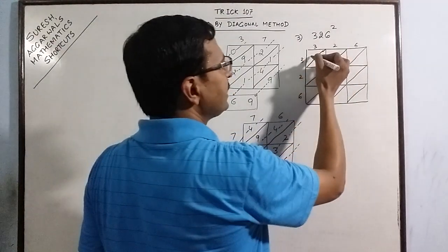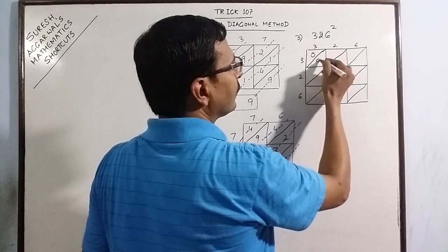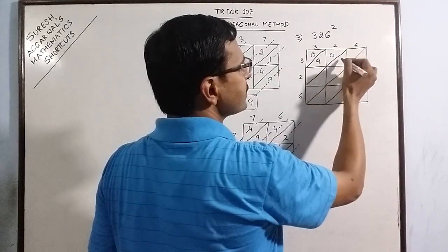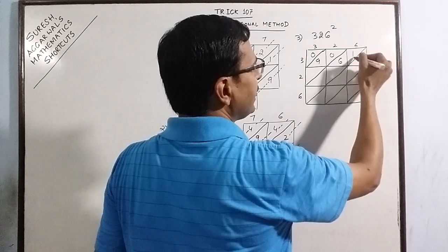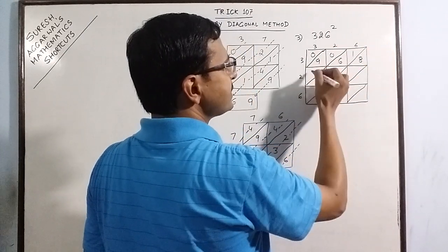3 into 3 is 9. So 0, 9. 3 into 2 is 6. So 0, 6. 3 into 6 is 18. 2 into 3 is 6.